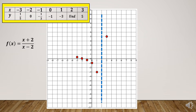Now let us connect the points on the left side of our broken line. You can observe that the graph is going down. Therefore, the opposite side of the broken line must go in the opposite direction, so the graph on the right side of the broken line is going up.